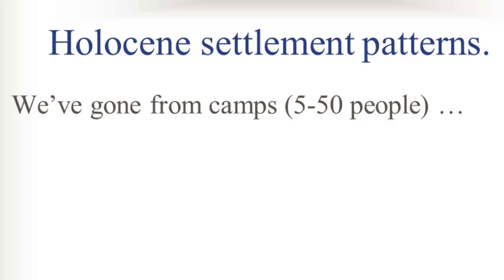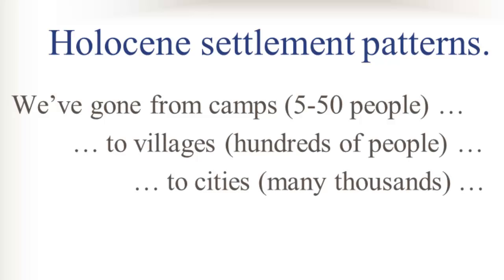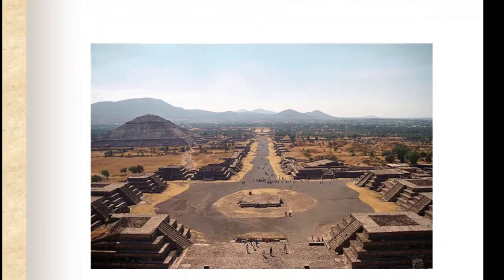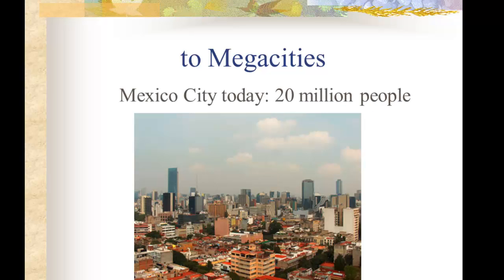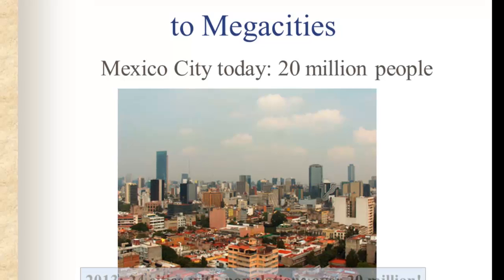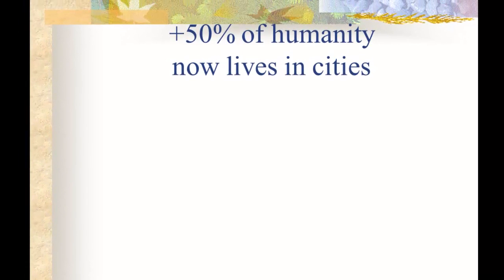Holocene settlement patterns involved a transition from hunting-and-gathering camps of five to fifty people, to villages of hundreds, to cities of many thousands. Some agrarian cities were truly massive — Teotihuacan in the Valley of Mexico had an estimated population of about 300,000 around 300 A.D. Today Mexico City has around 20 million people, and in 2013 there were 24 cities in the world with populations over 20 million, meaning half a billion people live in just 24 cities. Over half of the world's population now lives in cities — a milestone passed around 2008.